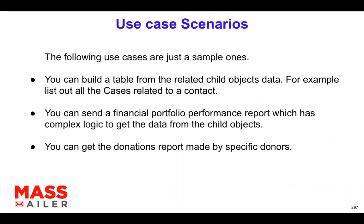The use case scenarios I'm sharing are just examples — yours could be completely different. Let's say you need to send emails to contacts informing them about their open cases, saying 'here are the open cases you have,' or maybe invoices. There could be any number of reasons to bring related object data into an email in a tabular format, because you have multiple records to loop through. It doesn't need to be tabular — it could be one record, any format. The goal is simply to get data from the child object.